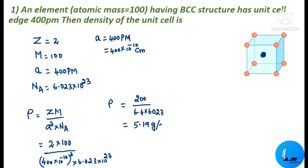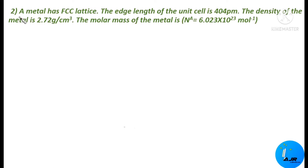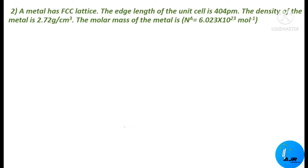The next problem: a metal has an FCC lattice — face centered cubic — and the edge length of the unit cell is 404 pm. The density of the metal is 2.72 gram per centimeter cube. Avogadro's number is 6.023 × 10²³. We are asked to calculate the molar mass of the metal.